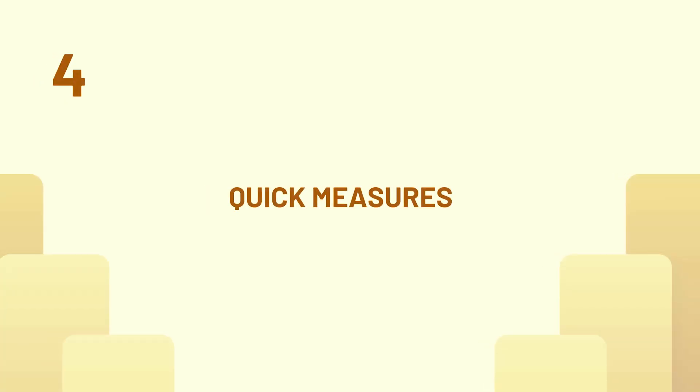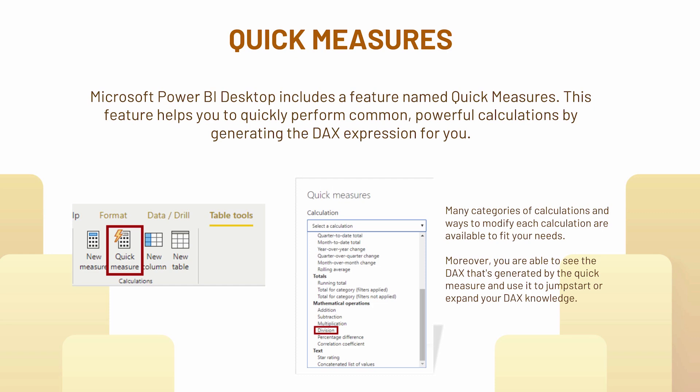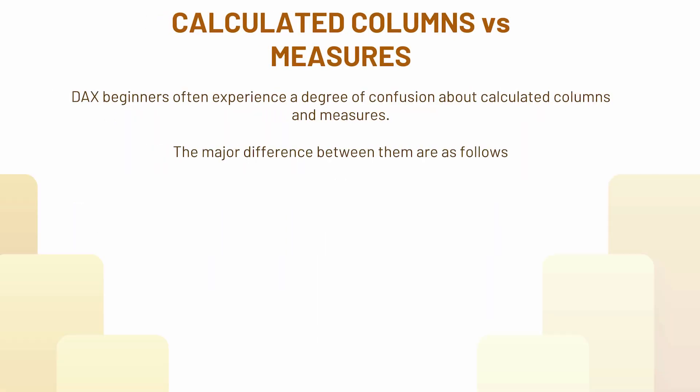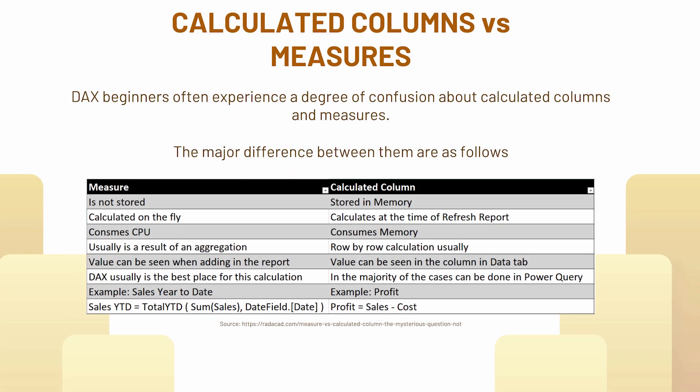Lastly, quick measures are another way to create explicit measures in Power BI Desktop or the web, but with the help of an assistant. I'll show that during the demo. There is also a common question asked in exams and interviews: what is the difference between a calculated column and a measure?